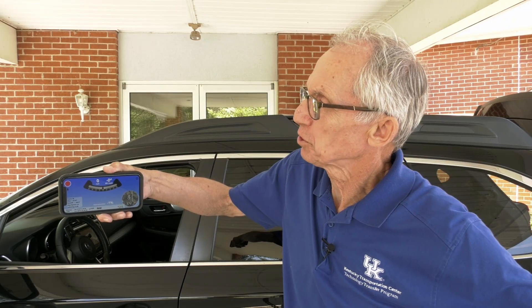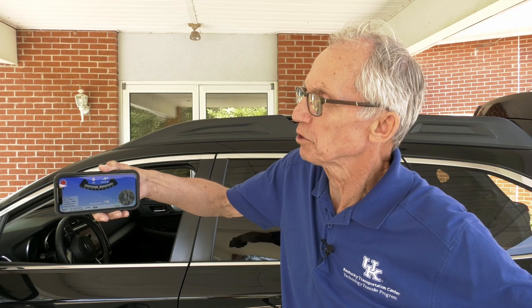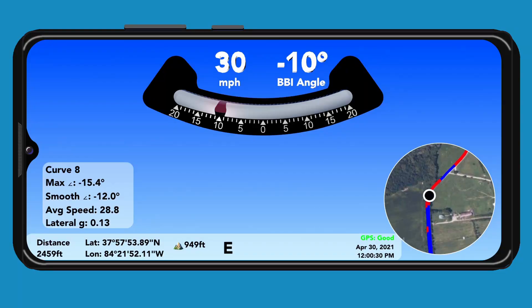There is also a version you can use on your phone. At the top of the app, it shows your speed driving through the curve. It also shows your deflection angle. In the lower right portion of the screen, it shows a map of your location on the roadway.